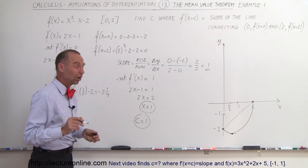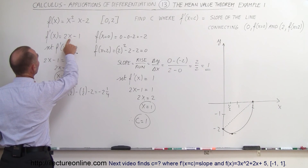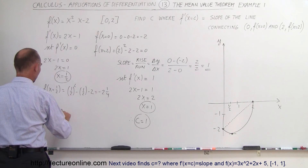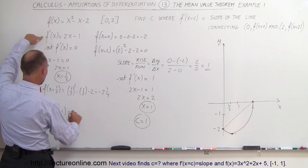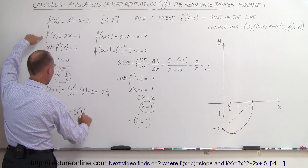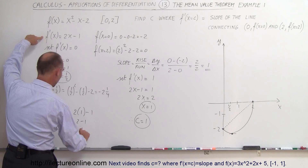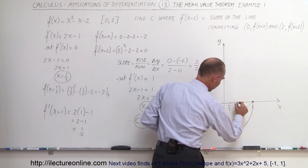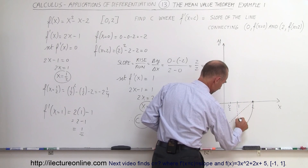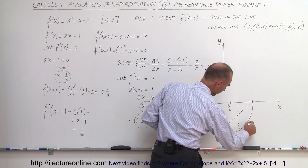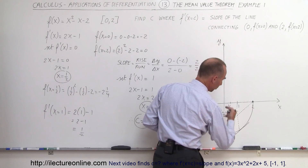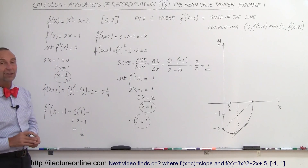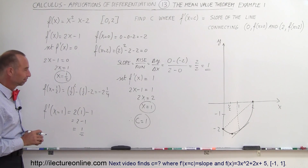We can quickly verify: f prime evaluated at x equals 1 gives us 2 times 1 minus 1, which is 2 minus 1, which is 1. That checks out — this slope equals the slope of the line right there. So when x equals 1, the slope of the function equals the slope of the line between the two endpoints. That's an application of the mean value theorem.